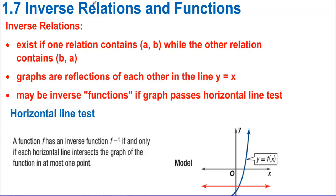Section 1.7: inverse relations and functions. An inverse relation exists if one relation contains the point (A, B) while the other relation contains (B, A). So if a function contains the point (1, 2), then its inverse contains the point (2, 1).